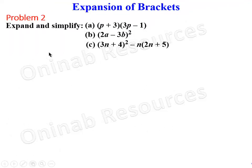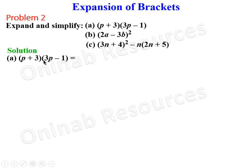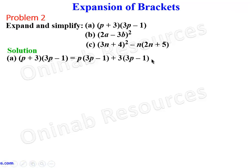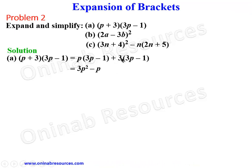We then go to Problem 2, part a. For this type of expansion we use p to multiply everything inside the second bracket, that is p(3p − 1), and we also pick plus 3 to multiply everything inside the second bracket. Expanding: p times 3p gives 3p squared, p times minus 1 gives minus p, plus 3 times 3p gives plus 9p.